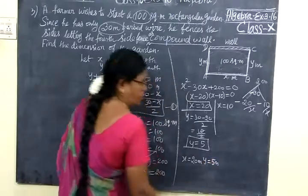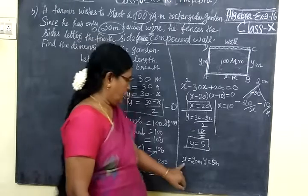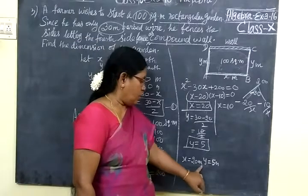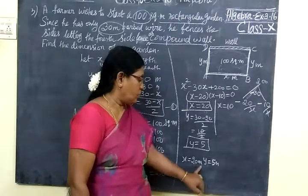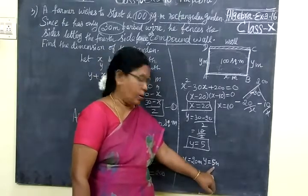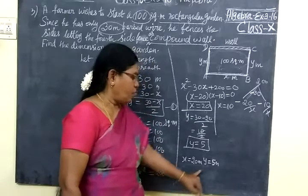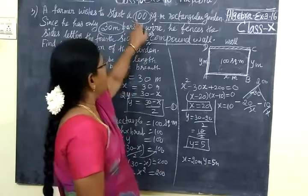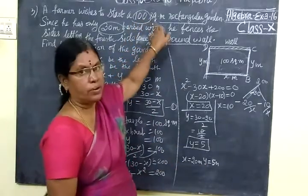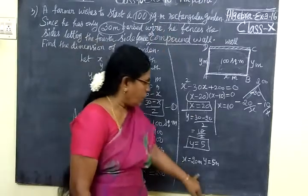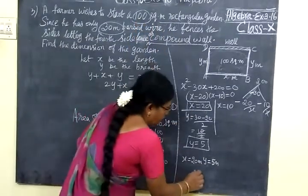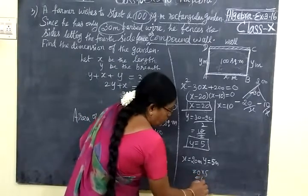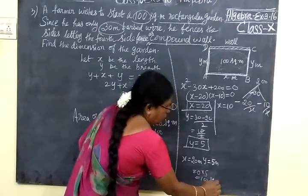So the rectangle can be formed with x value as 20 and y value as 5 meter. That is length equal to 20, breadth equal to 5. 20 into 5, 100. If you want to verify the answer, here it is given area is 100 square meter. So if you multiply this, you are getting this 100. 20 into 5, you are getting 100 square meter.